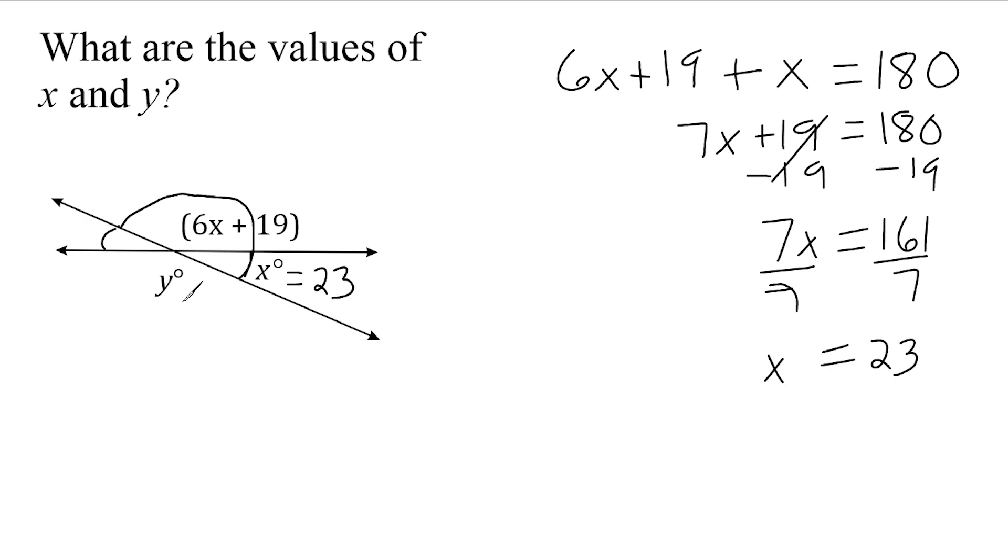And now we have to figure out what y is. Now we know that this angle here and this angle right here are supplementary to each other. And whatever y is equal to, this expression up here is equal to the same thing. So we could do this one of two ways. We could either take this 6x plus 19 and substitute x with 23 because we already solved for x.